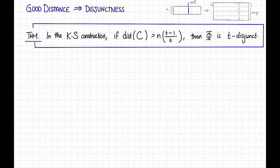So let's state and prove a theorem to that effect. Theorem in the Kautz-Singleton construction that we just saw on the previous slide. If the distance of the code C is greater than n times t minus 1 divided by t, then the matrix phi that we get this way is t-disjunct. Let's prove this theorem.